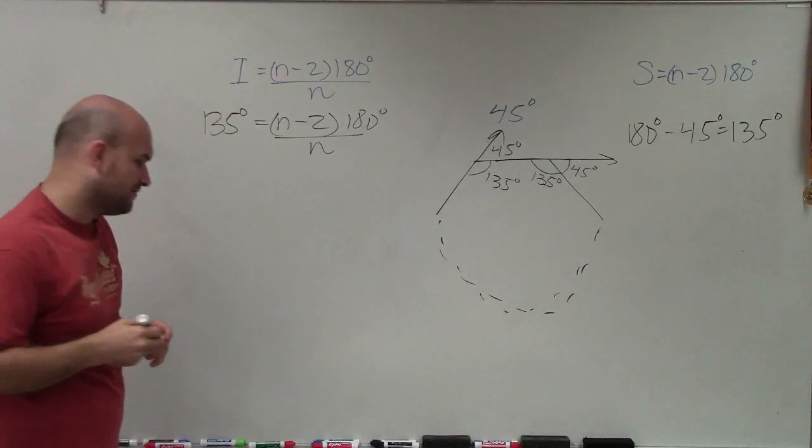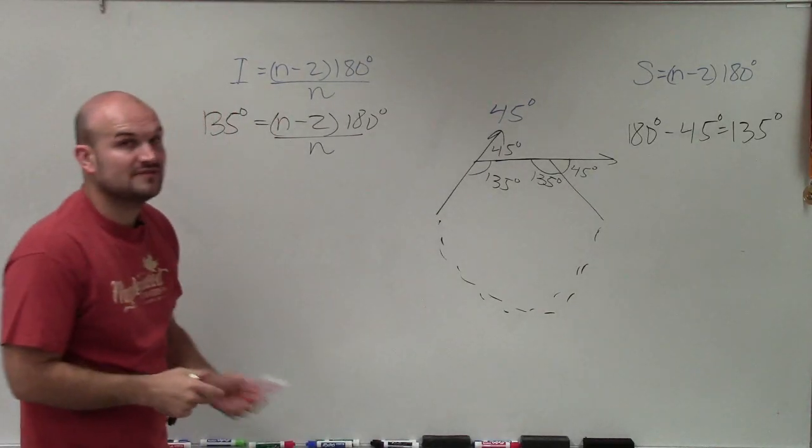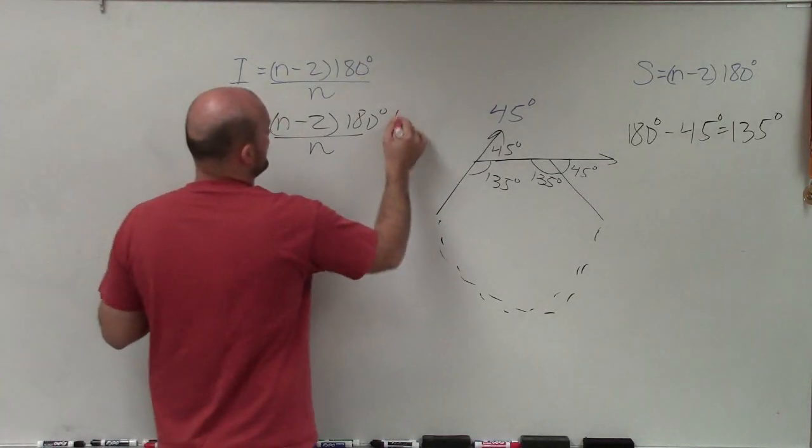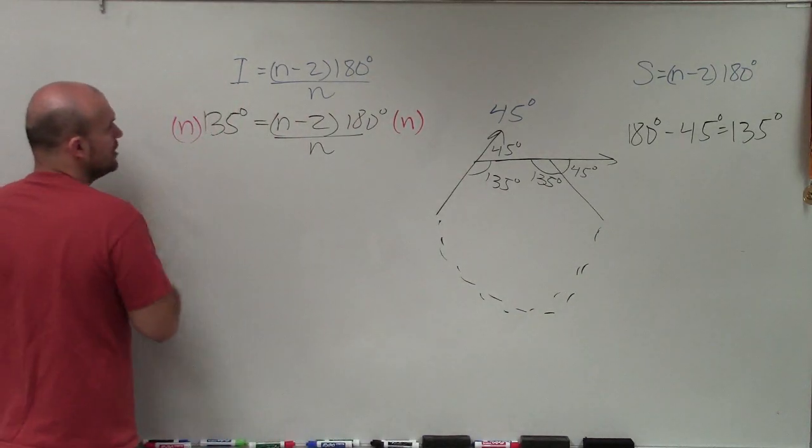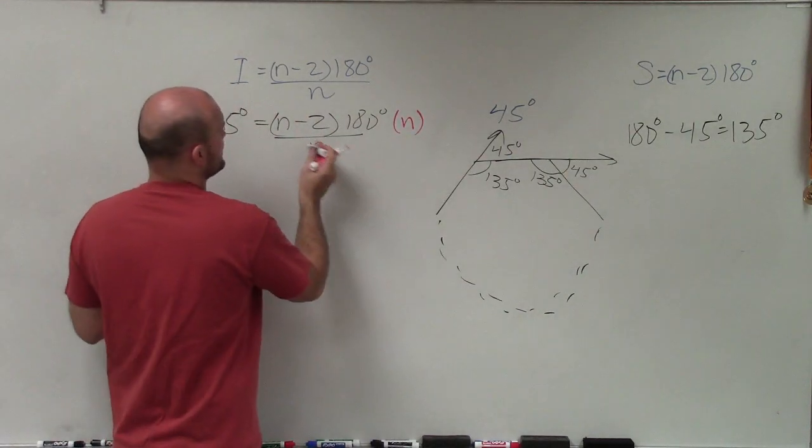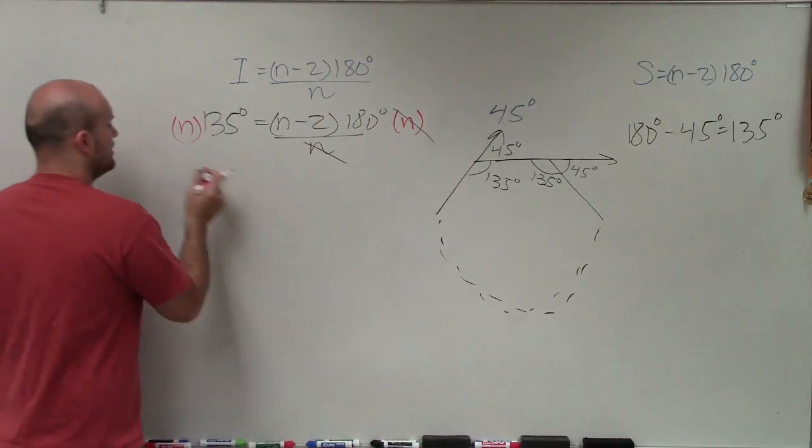So now we need to solve for n. And to do that, we need to get the n off the denominator first. So to do that, I'll multiply by n on both sides. When I multiply n on the right side, these n's divide into 1. Therefore,